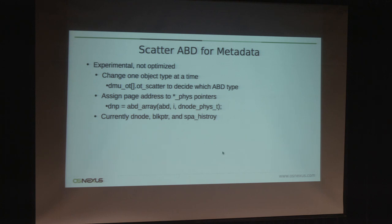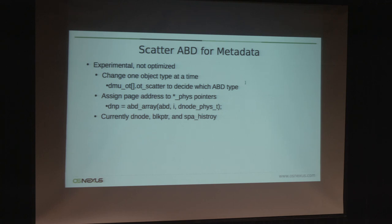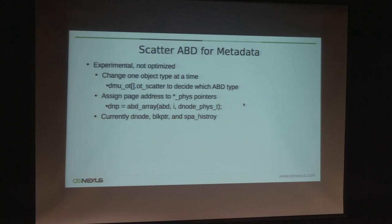Earlier I said that using scatter ABD format for metadata is pretty difficult. However, I recently tried to approach this problem — it's experimental and not optimized. Because there are so many metadata object types, the approach is to deal with one at a time. I added a field in the DMU object table to decide whether to use linear ABD or scatter ABD. For physical pointers, we assign the underlying page address in the scatter list to the physical pointers, and we need to modify the code accessing the pointers. Currently I have done the block pointers and SPA history — three types of metadata.